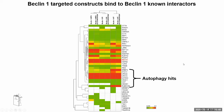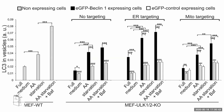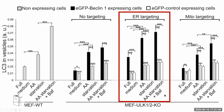Now to the ULK knockout rescue part. We received the ULK wild-type and ULK1/ULK2 double knockout cell lines from our collaborators. I transfected the cells with my GFP-tagged constructs and kept them either in full media, starved them, or starved them with bafilomycin. I then quantified LC3, which as I told you is the most important autophagy marker.